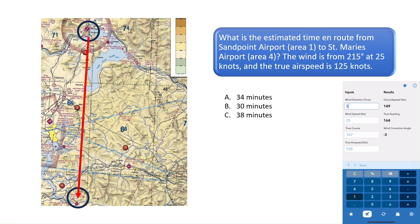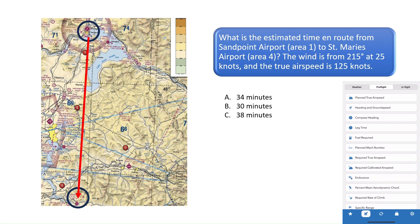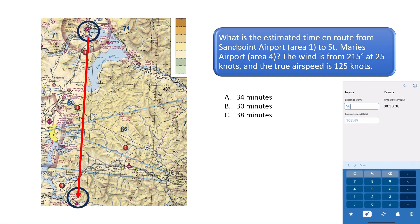We then need to find the ground speed given the wind conditions using the heading and ground speed function on an E6B calculator. Enter the wind direction of 215 degrees, the wind speed of 25 knots, the true course of 181 degrees, and the true airspeed of 125 knots to find the ground speed of 103.5 knots. Finally, use the elapsed time function with the distance of 58 nautical miles and the ground speed of 103.5 knots to find the estimated time of about 33 minutes and 38 seconds.